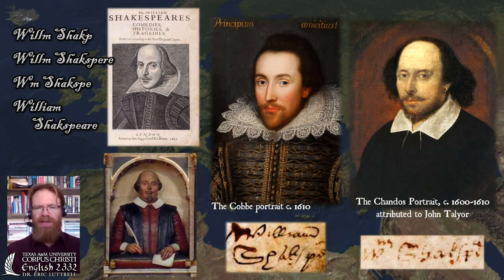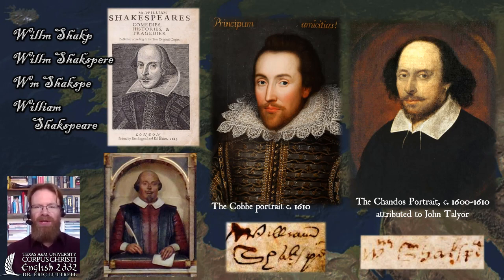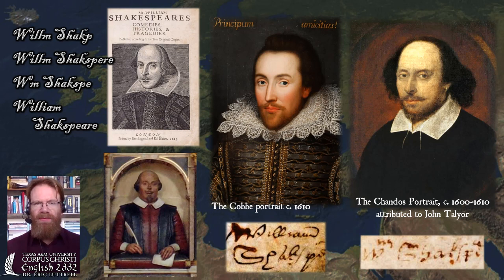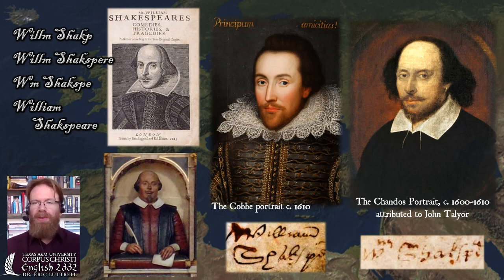We have his signature on legal documents from the time, but his signature and even the spelling of his name changes over time. Sometimes he writes his name as W-I-L-L-M and Shakespeare as S-H-A-K-P; sometimes S-H-A-K-S-P-E-R-E. The one way he never spells his name is the way we spell it today. From these legal documents we know he was born in 1564 and died in 1616. He lived the first part of his life in Stratford-upon-Avon, made his way to London, joined prominent theater troupes, and quickly became highly respected, especially for his writing.